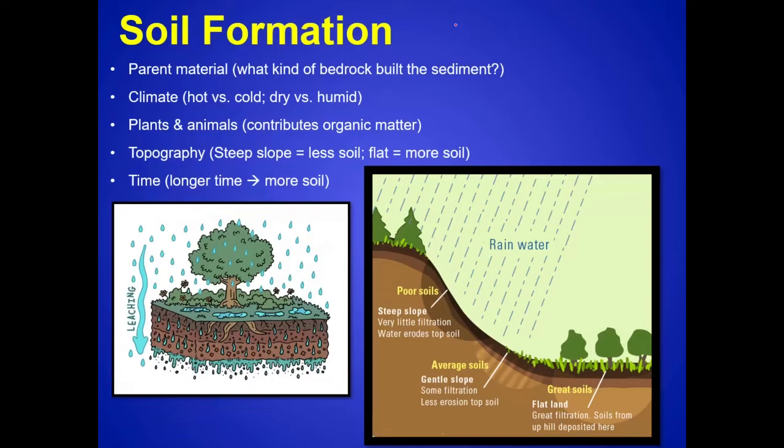Let's talk about five factors that affect soil formation. Soils can form very slowly — sometimes topsoil only forms about an inch a century. Some places can form topsoil a little bit faster, maybe an inch every decade or so, but it forms slowly. That's why you might hear of people trying to conserve topsoil — it's a very important resource with all the organic matter and nutrients.